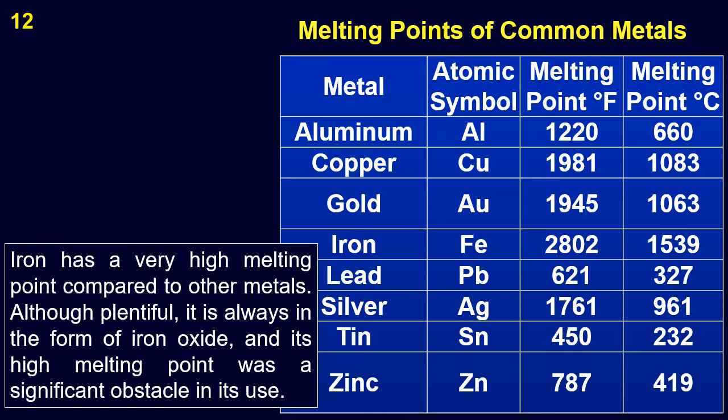These are the melting points of common metals and alloys. Iron has a very high melting point compared to other metals. Although plentiful, it is always in the form of iron oxide, and its high melting point was a significant obstacle in its use.